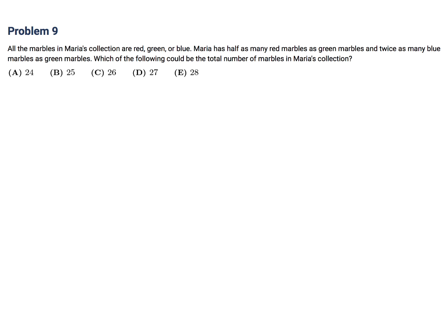All the marbles in Maria's collection are red, green, or blue. Maria has half as many red as green, twice as many blue as green. Which of the following could be the total number of marbles? We have red, green, and blue. So we have half as many red as green. So if this is x, this is 2x. And then we have twice as many blue as green. So if this is 2x, this is 4x. So the total would be x plus 2x plus 4x, which is 7x. So the total is a multiple of 7. And of these, the only multiple of 7 in the answer choices is E, which of course would be 7 times 4.